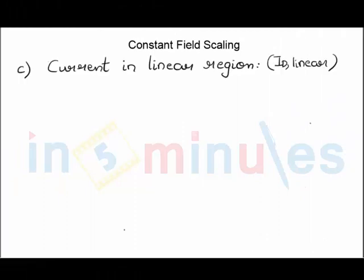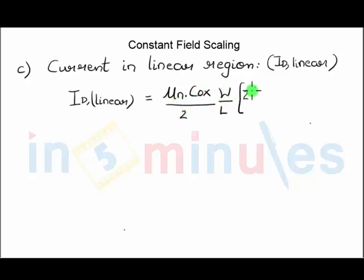The next parameter which we would like to understand is current in the linear region. So we know that the equation of the current in the linear region is given by mobility into oxide capacitance mu/2 times W by L. We have already studied this formula in the past: twice Vgs minus the threshold voltage into Vds minus Vds square.